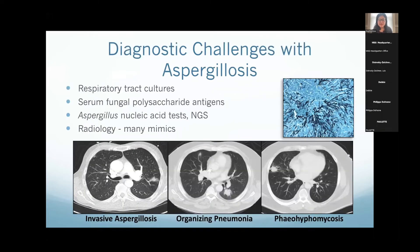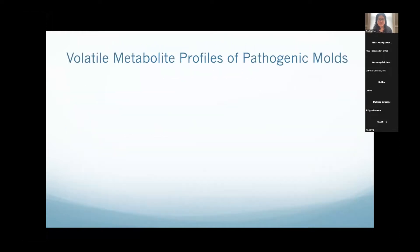Everyone here is very well familiar with the diagnostic challenges with aspergillosis — the problems with respiratory tract cultures, the problems with beta-glucan and galactomannan testing, aspergillus nucleic acid tests, next-generation sequencing, and the problems of radiology as well. In our hospital, the radiologist always tells us it's likely to be a fungal infection when they see something like this, and it often is not. So how do we treat people appropriately when we're not sure what we're treating? This is what motivated this work years ago.